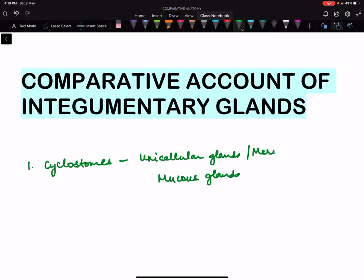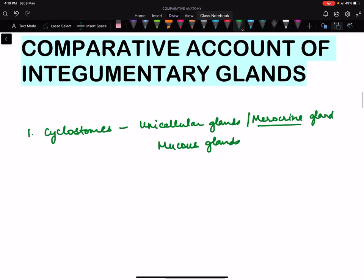They are merocrine, apocrine, and holocrine. So they are merocrine type of glands.